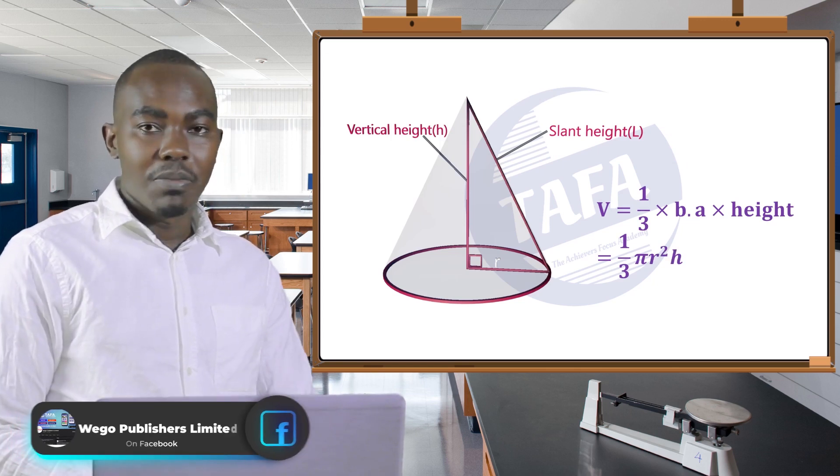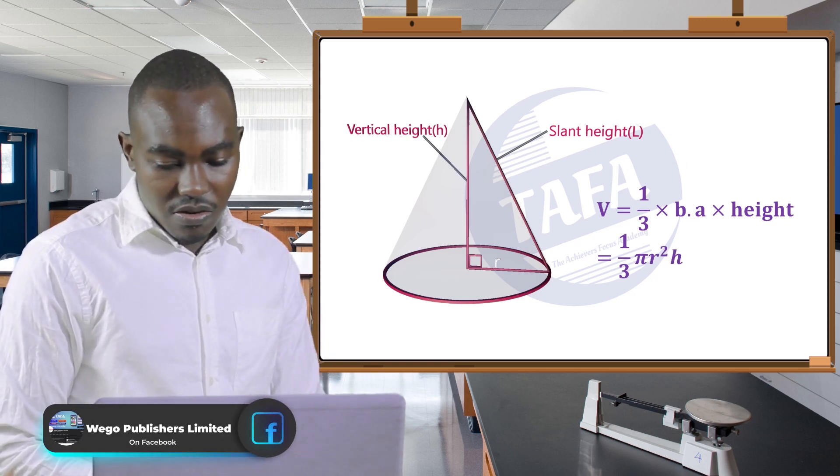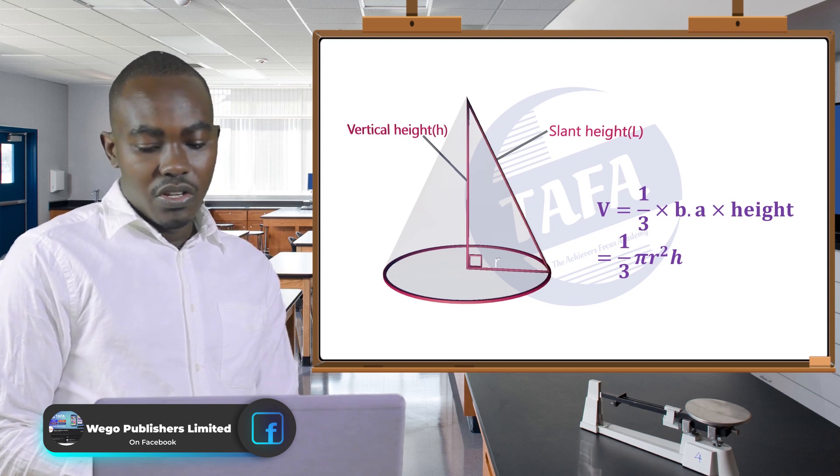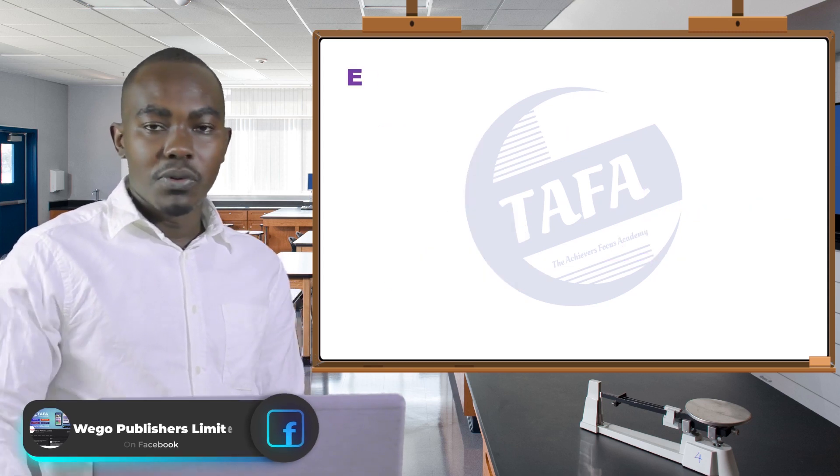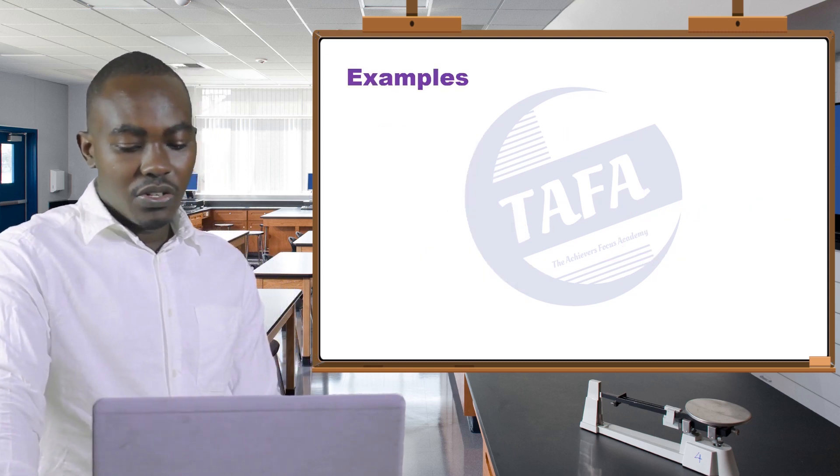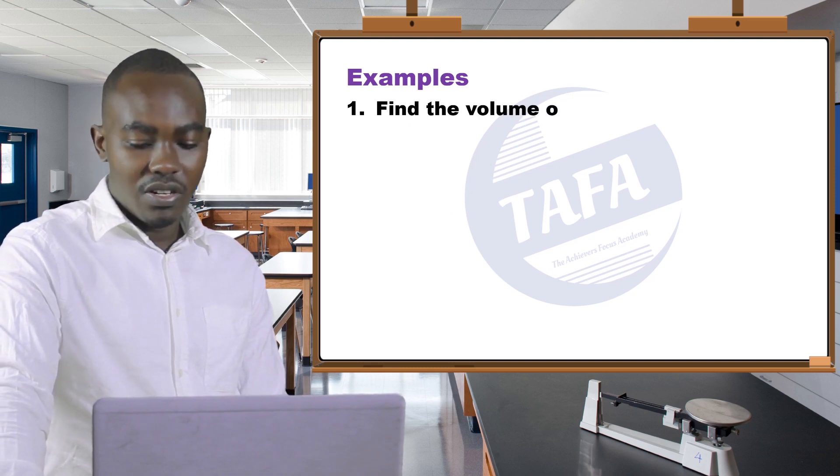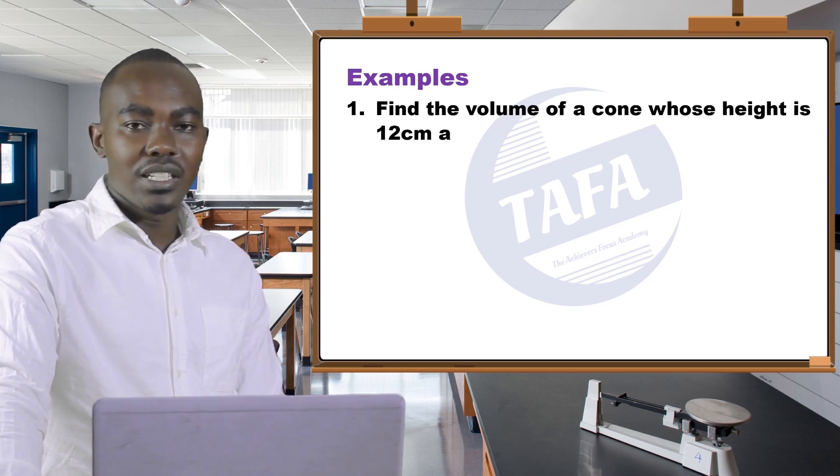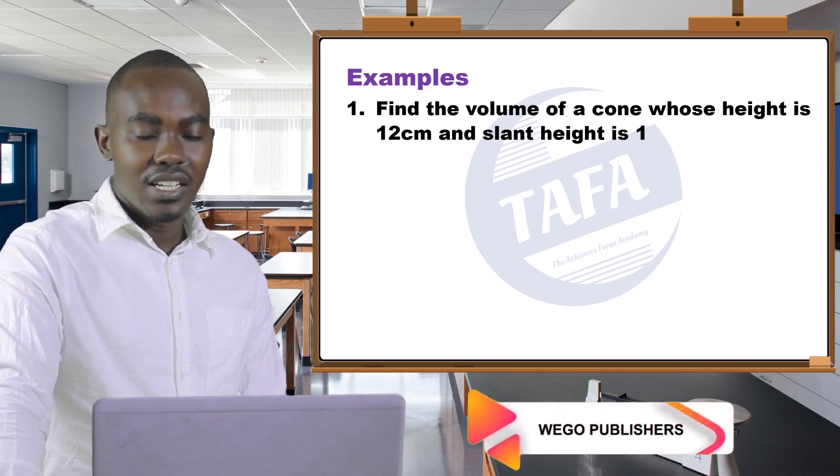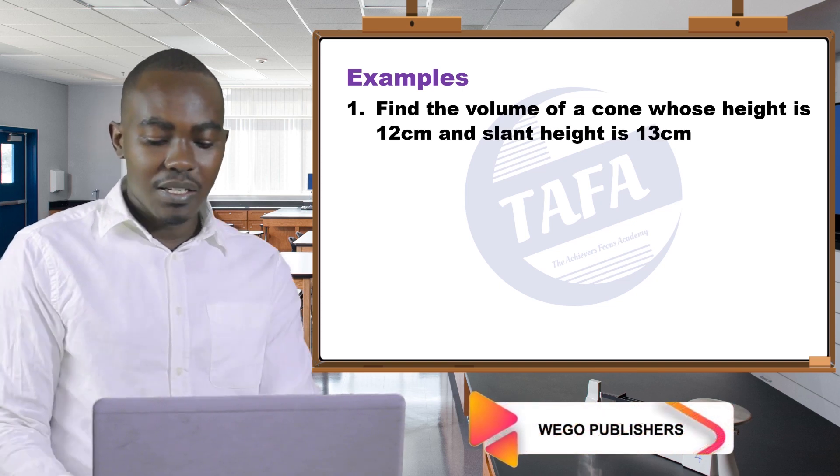The height which is perpendicular with the radius. So the first example: find the volume of a cone whose height is 12 centimeters and slant height is 13 centimeters.